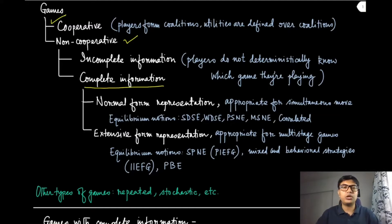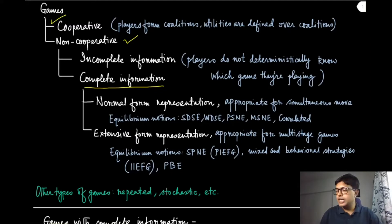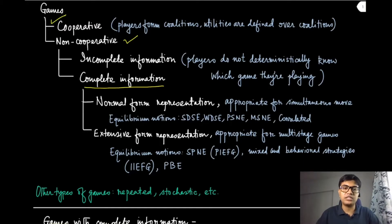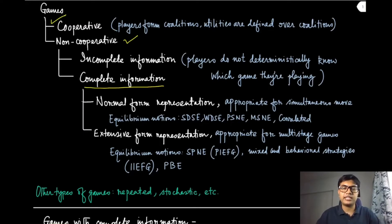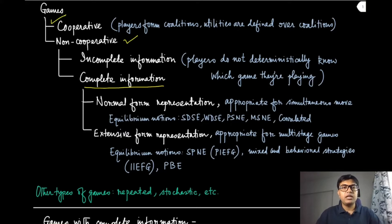We first looked at what we call complete information games. Within the complete information setup, we looked at two different representations: one is the normal form and the other is the extensive form. The normal form representation is more appropriate for simultaneous move games, while the extensive form is more appropriate for multiple-stage games, and the equilibrium concepts are different for each.